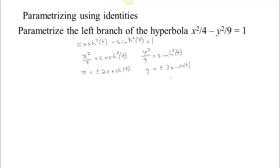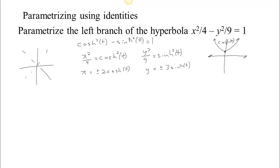To figure out which signs to choose, we think about the graphs of sinh and cosh. The graph of cosh looks like an upward-opening exponential curve passing through (0, 1). If we choose x to be positive 2 cosh t, the x value will always be positive. But since we want the left-hand branch, we must choose x equals negative 2 cosh t, which keeps x values on the left-hand side.